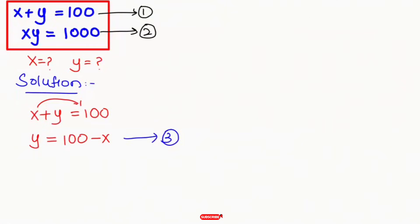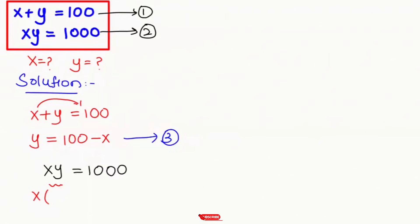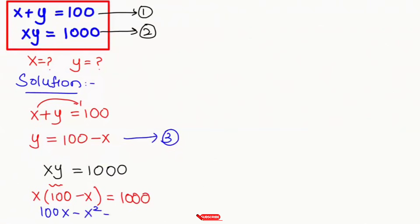Now we're going to take equation 2: xy is equal to 1000. In place of y, I'm going to plug in the y value from equation 3, that is 100 minus x. So x times (100 minus x) is equal to 1000. This will turn to 100x minus x squared is equal to 1000.